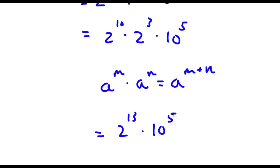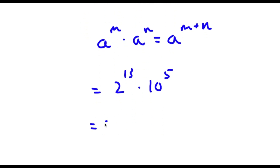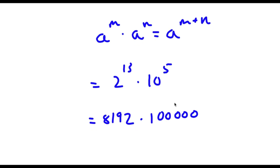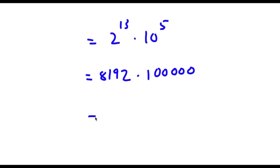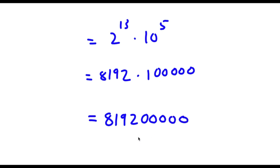And 2 to the power of 13 is equal to 8,192. And 10 to the power of 5 is equal to 100,000. So if I multiply these two, I get 819,200,000. So this is my answer.